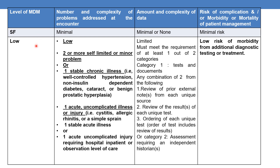For low level of MDM, the number and complexity of problems addressed at the encounter must be low, which can be two or more self-limited or minor problems, or one stable chronic illness such as well-controlled hypertension, well-controlled diabetes, cataract, or BPH (benign prostatic hypoplasia). Or one acute uncomplicated illness or injury such as cystitis, allergic rhinitis, or simple sprain. Or one stable acute illness, or one acute uncomplicated injury requiring hospital inpatient or observation level of care. In any of these cases, the level of MDM according to number and complexity of problems will be low.